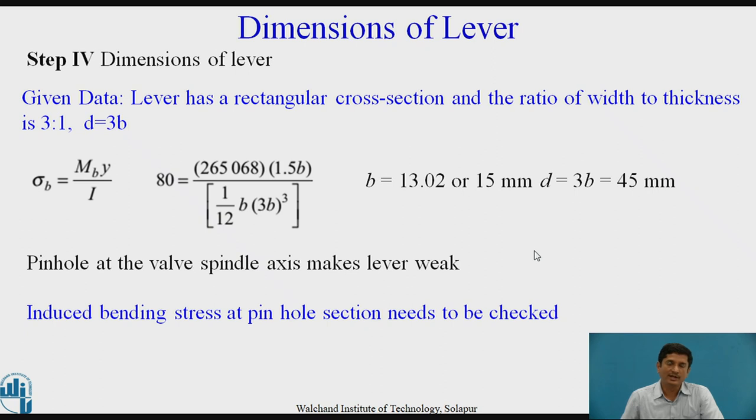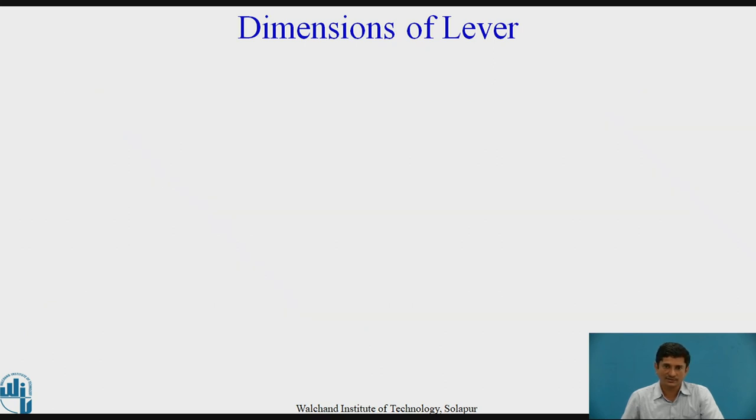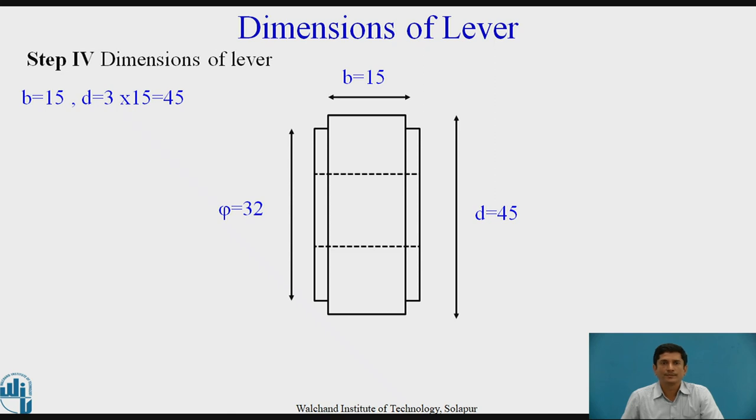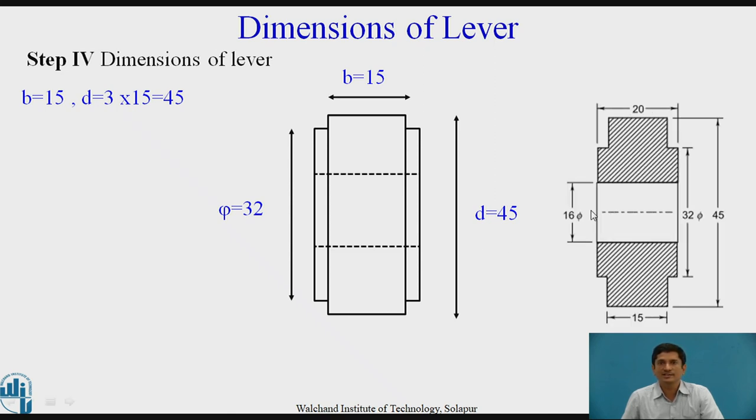Now, the pinhole at the valve spindle makes the lever weak. We need to check the bending stress at the pinhole section. The dimensions of the lever are 15 and 45. We need to add the boss on both the ends so that there is sufficient strength at the pinhole. The hole for the pin, the cross section is like this: 16, 32, 45, 15 and boss increases the overall thickness of the lever becomes 20 at the pin section.